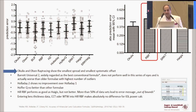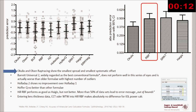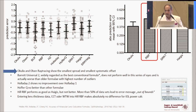Aculix and Olson ray tracing show the smallest spread and smallest systematic offset. Barret Universal 2 is widely regarded as the best conventional formula but does not perform well in this series and is actually worse than older formulas. Holladay 2 shows no improvement over Holladay 1. Hoffer Q is no better than other formulas. Hill RBF performs as good as Haigis but no better, and more than 50% of data sets lead to an out-of-range error message. Entering lens thickness, CCT, and white-to-white into Hill RBF makes no difference in higher-power calculations.